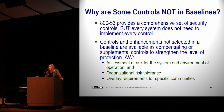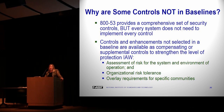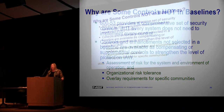The reason SP 800-53 has so many controls is to be comprehensive — so that for any threat you're trying to counter, there's a control available. Controls and enhancements not selected in your baseline are available for supplementing when needed. Additionally, the joint task force work with DoD resulted in many controls being added above and beyond the high baseline because DoD and the intelligence community required them. This has made the catalog much more comprehensive. DoD uses CNSSI 1253 with overlays for various DoD system types.